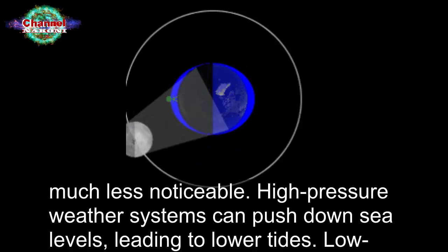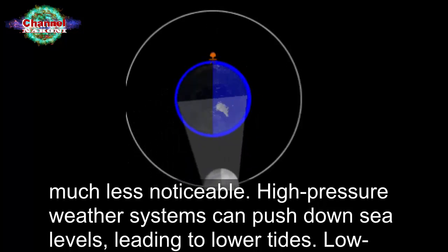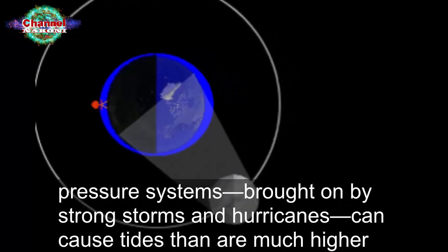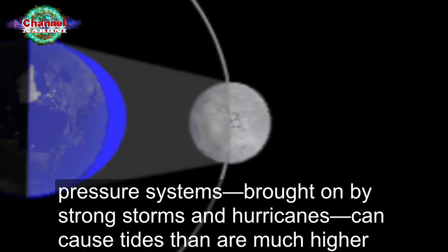High pressure weather systems can push down sea levels, leading to lower tides. Low pressure systems brought on by strong storms and hurricanes can cause tides that are much higher than predicted.